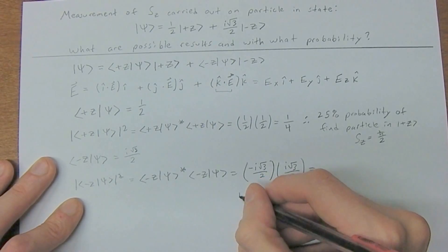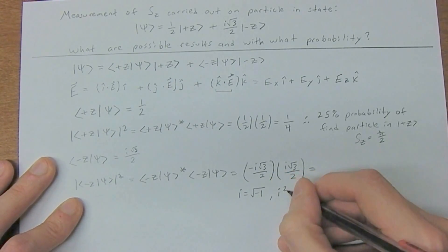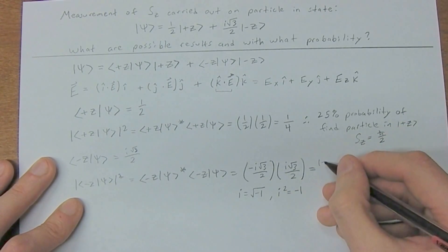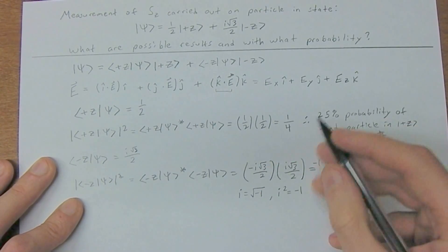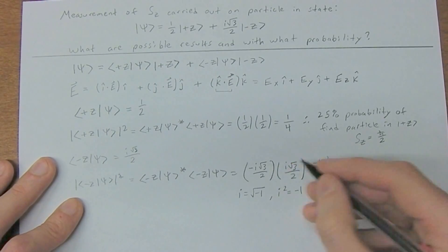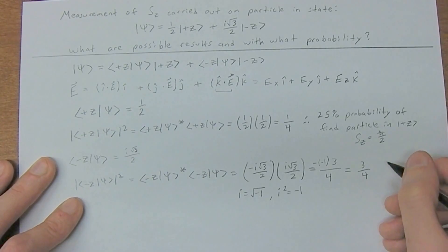Recall that i is square root of negative one, where i squared is then equal to negative one. So i squared will give us a negative one. We already had a negative out front, so those are going to cancel. Square root of three multiplied together is three, and two times two is four. So this will give us three quarters, or therefore a 75% probability.